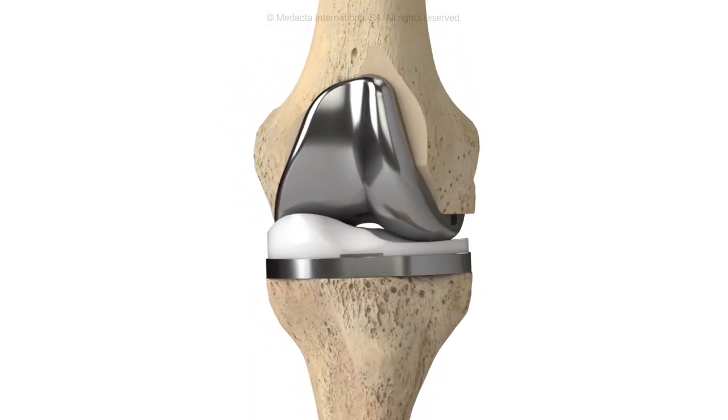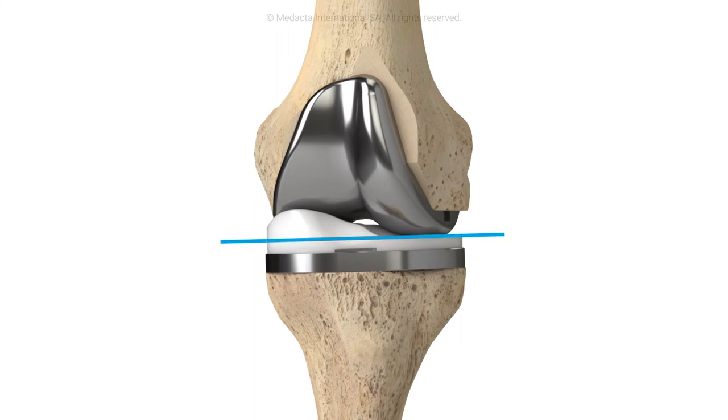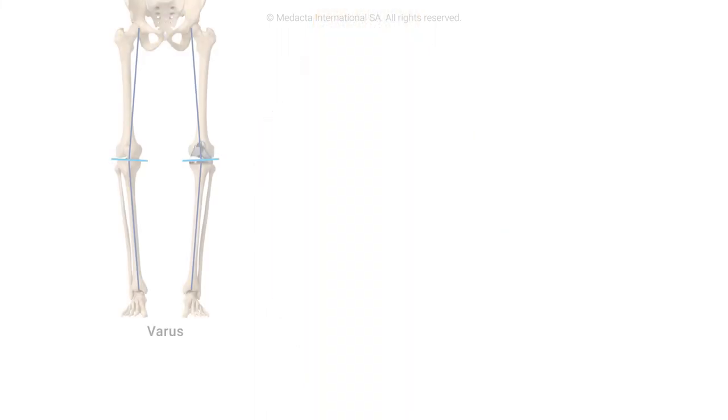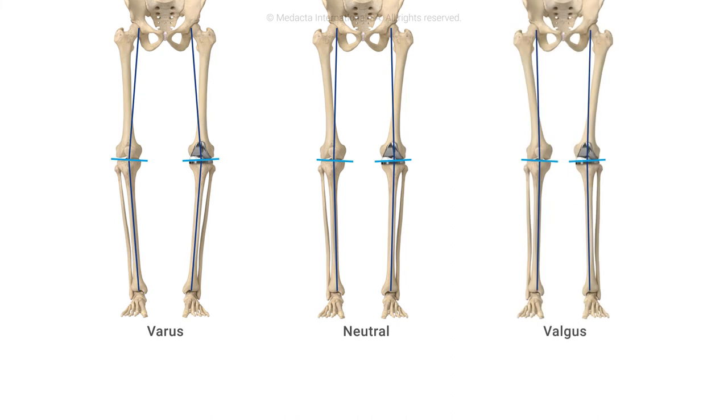Through anatomic resurfacing with no ligament releases, kinematic alignment restores the native joint line as well as the limb alignment of the patient for a truly personalized implant placement.